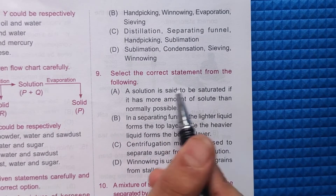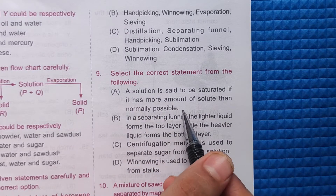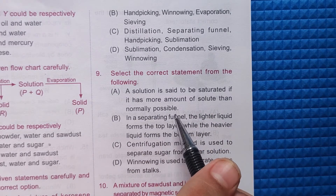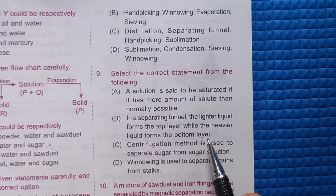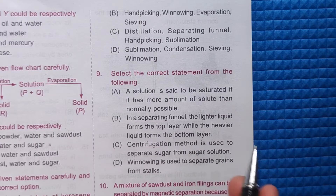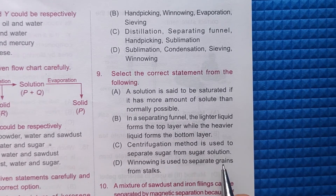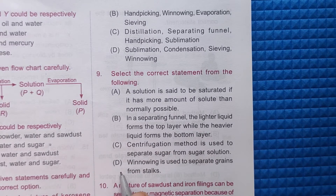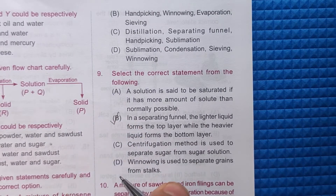Question 9: Select the correct statement. Option A: a solution is said to be saturated if it has more solute than normally possible — incorrect; that describes a supersaturated solution. Option B: in a separating funnel, the lighter liquid forms the top layer while the heavier liquid forms the bottom layer — this is correct. Option C: centrifugation is used to separate sugar from sugar solution — incorrect; centrifugation separates cream from milk. Option D: winnowing is used to separate grains from stocks — incorrect; winnowing separates grains from husk. The correct answer is option B.